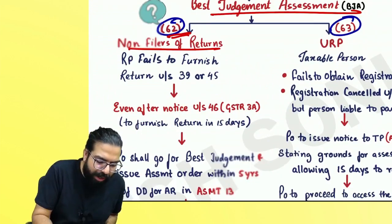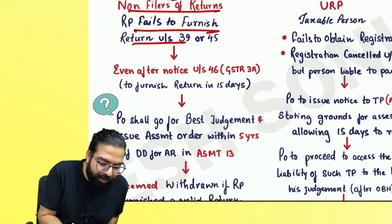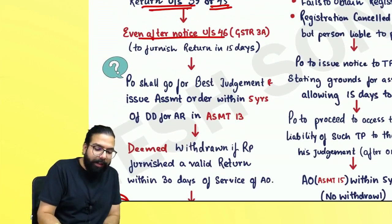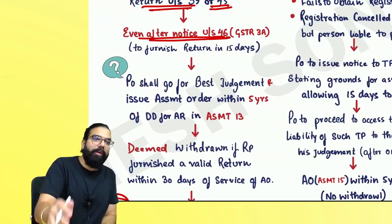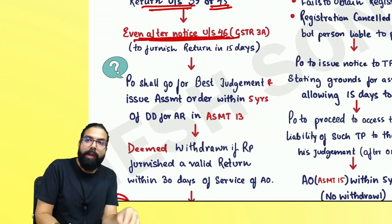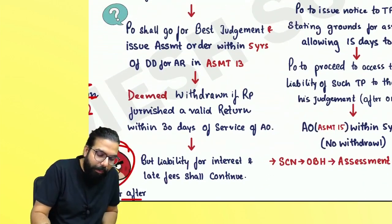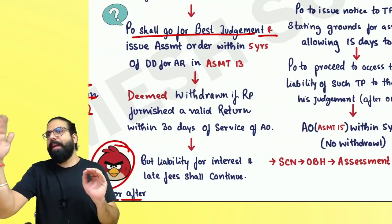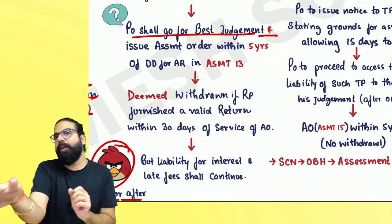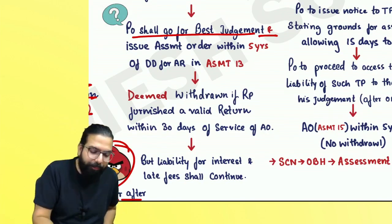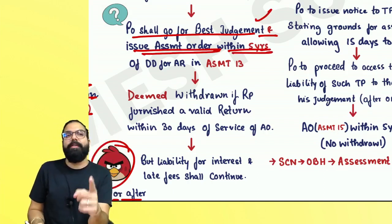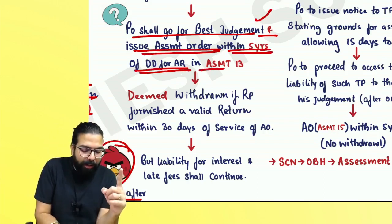Section 62 talks about best judgment assessment of a non-filer. If you are a registered person who has failed to file his return under section 39 or section 45 — your final return — they will give you a notice telling you to file the return within 15 days. If you don't file the return even after the notice within 15 days, the proper officer will do the best judgment assessment and issue an assessment order in ASMT-13. The time limit for the assessment order is five years from the due date of the annual return.